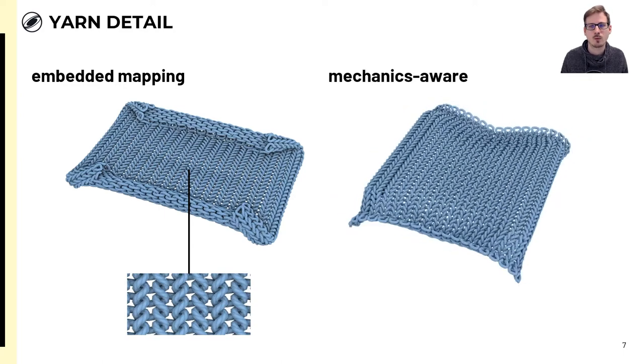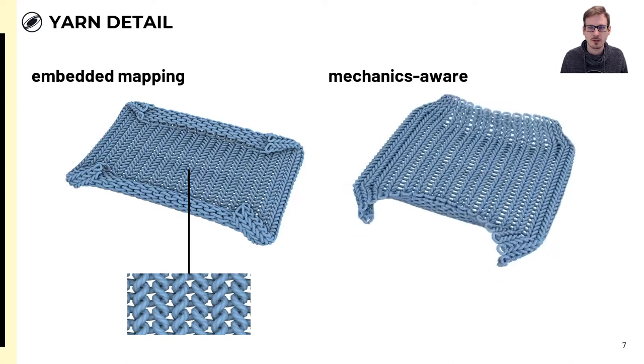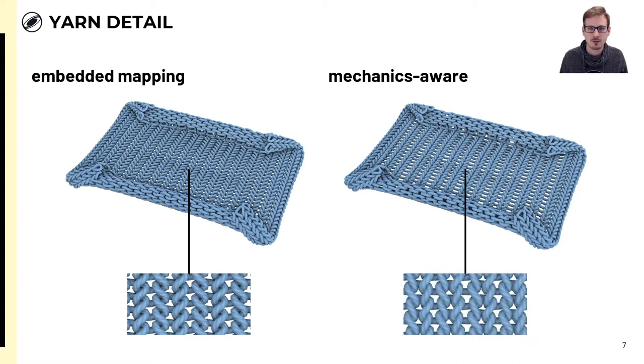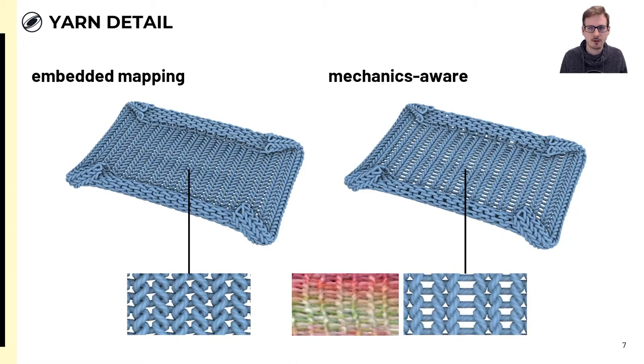What we want is a mechanics-aware approach, adding local yarn interactions back based on the cloth deformation and in a way that is consistent with physical simulation, but with the efficiency of the embedded approach. In this case, the yarn should tighten when the cloth is being stretched, similar to the real-life footage from before. And so the question is how can we get this if we just have deformation information on the scale of the cloth mesh?